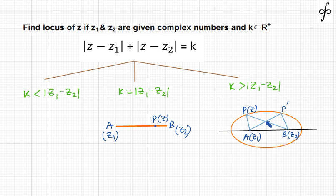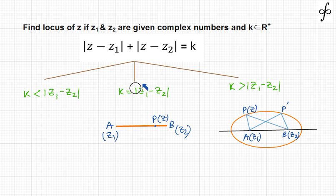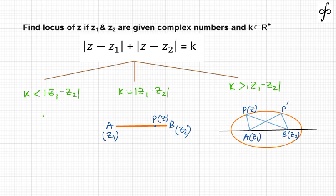So either PA + PB is more than AB, or PA + PB equals the distance between z1 and z2. We can guarantee that k should be either equal to |z1 - z2| or greater than |z1 - z2|. For the first particular case, k less than |z1 - z2|, this situation becomes an impossible situation — no locus is possible if k is less than |z1 - z2|.